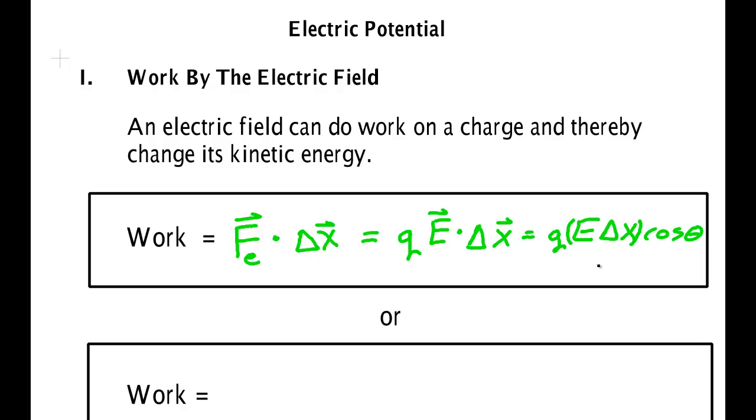Now in most of the problems that we have in this course, this cosine will turn out to be one. And so we have Q E times delta X or Q E D a lot of times because the distance, the delta X will just be some distance D.